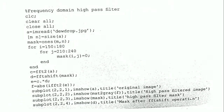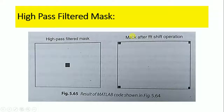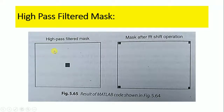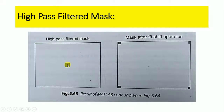Now we will define the mask for this high pass filter. The mask is set equal to ones of M comma N, so the size of the mask is the same as the size of the image. In this high pass filter mask, all surrounding values are 1, and the central region has a mask value equal to 0 — the black area — while remaining places have the mask value equal to 1, which is white.